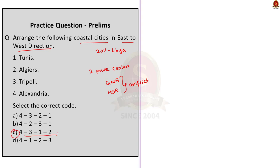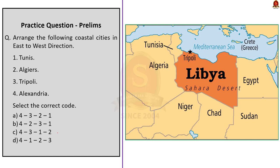When discussing map questions, you should not stop at only the points discussed — do your own homework. For example, from a map of Libya, UPSC might ask about countries bordering Libya. The countries sharing land borders with Libya are Egypt, Sudan, Chad, Niger, Algeria, and Tunisia. UPSC might also ask whether the River Nile passes through Libya — the answer is no. River Nile passes through 11 countries: Egypt, Burundi, Tanzania, Rwanda, the Democratic Republic of Congo, Kenya, Uganda, Sudan, Ethiopia, and South Sudan. You must think about possible questions and note down points — this is the best way to prepare for map-based questions.